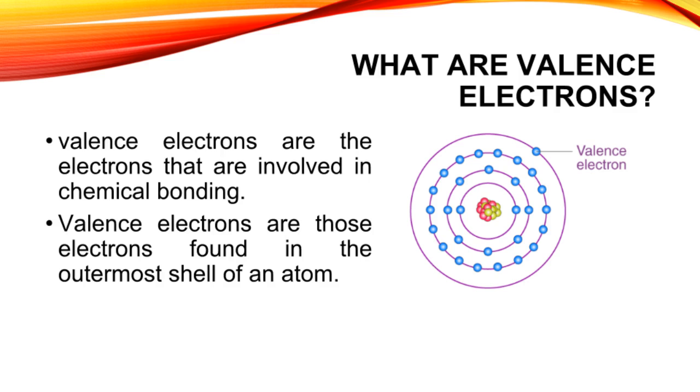Because valence electrons are the farthest from the nucleus, they can move from one atom to another much more easily. For this reason, valence electrons are the electrons that are involved in chemical bonding.